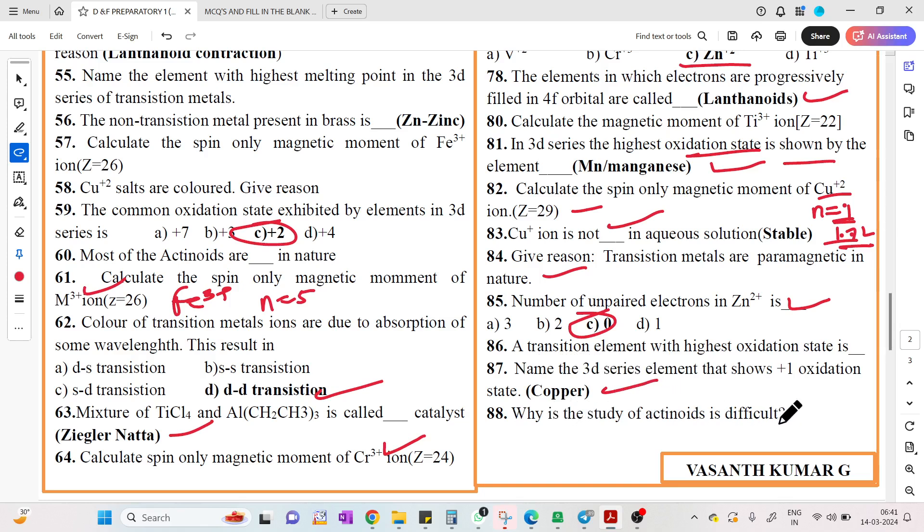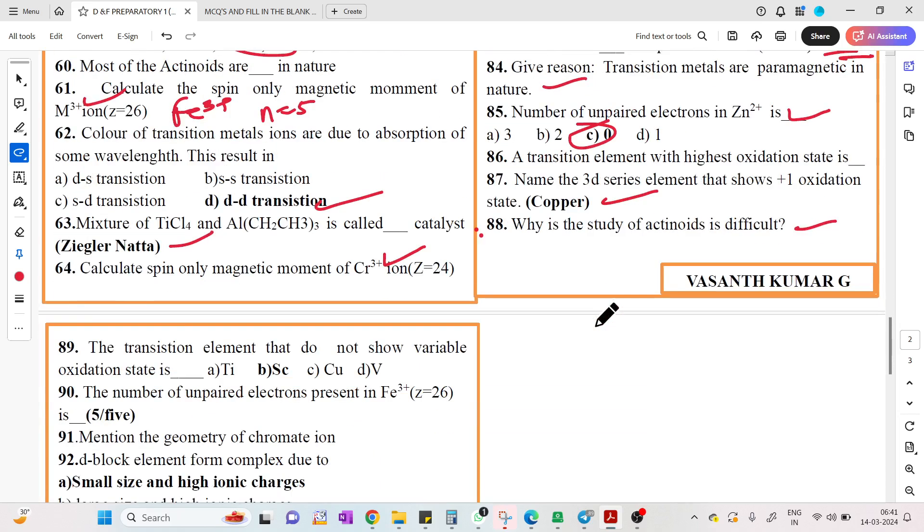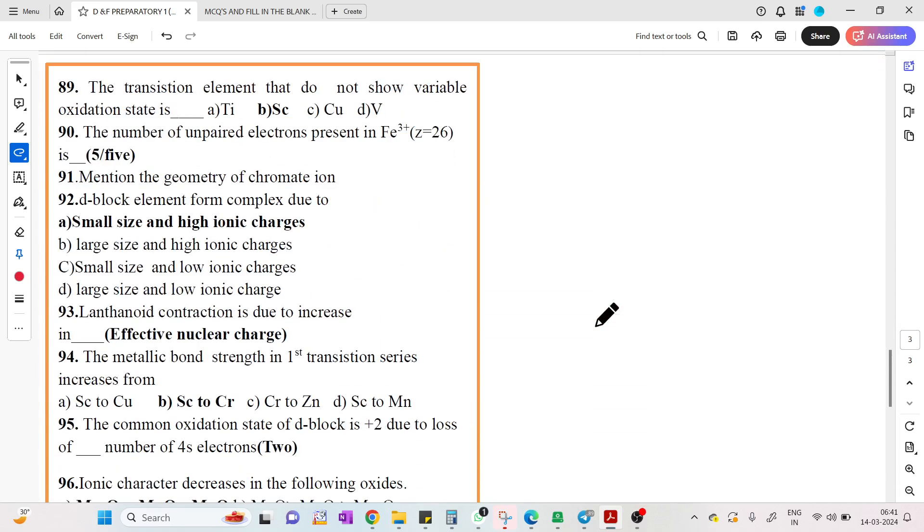Cu+ ion is not stable in aqueous solution. Transition metals are paramagnetic in nature - the reason is unpaired electrons and d-d transition. Number of unpaired electrons in Zn2+ is zero. Name the 3D series element which shows plus 1 oxidation state: copper. Why is the study of actinides difficult? Because of trace availability and they are highly radioactive.